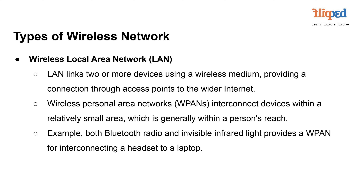Instead of using physical cables, a wireless LAN provides connectivity through access points, enabling devices to communicate and access the wider Internet. Key Characteristics of Wireless LAN: Wireless Connectivity. In a wireless LAN, devices such as laptops, smartphones, tablets, and printers connect to the network without the need for physical wired connections. This allows for greater mobility and flexibility in device placement.